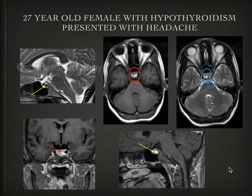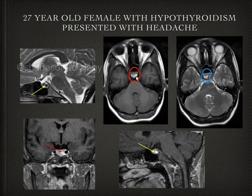So this is the classic appearance — we cannot miss the lesion. You can see a T2 hypointense nodule which is located in the sella, and here you can see a lesion with T1 hyperintensity.